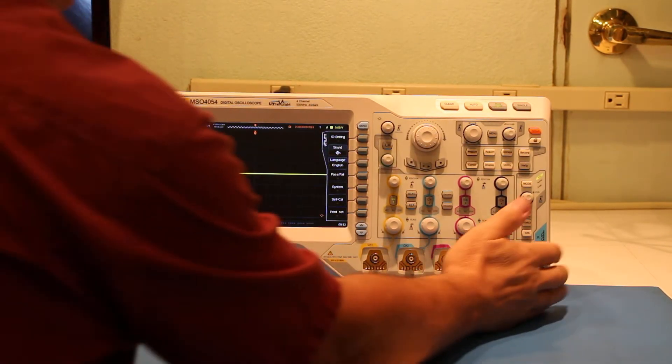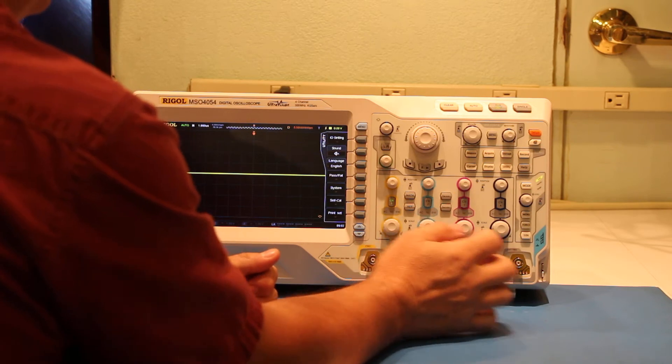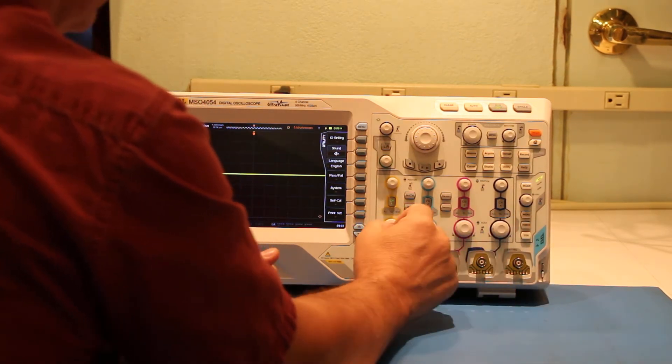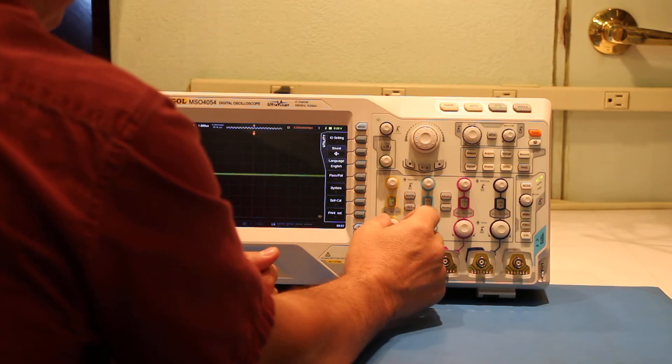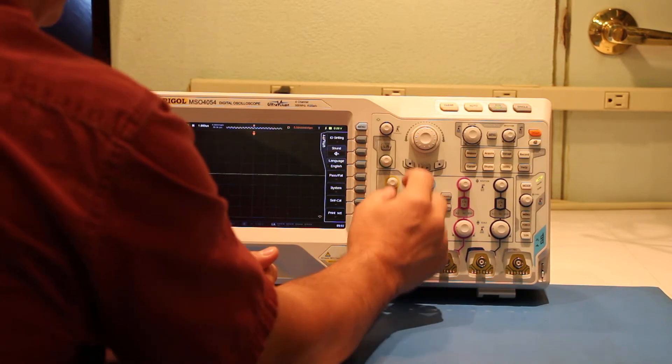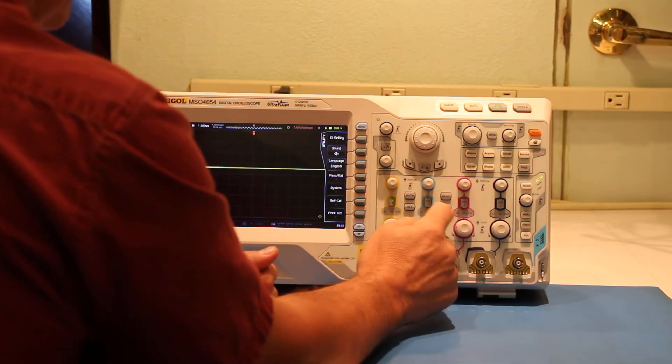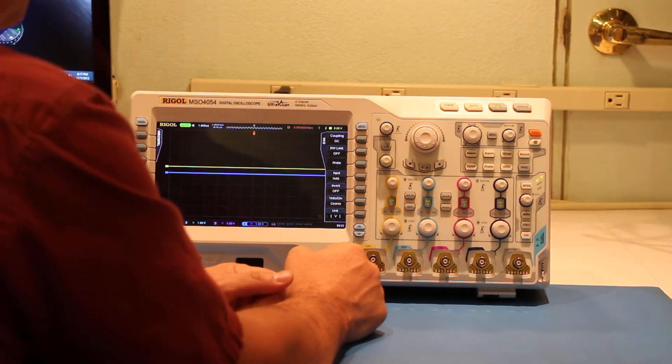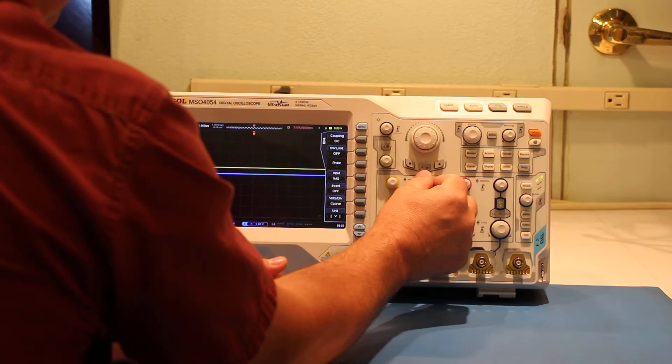Okay, some of the things that we're going to show you here very quickly: we've got standard vertical information here. We can adjust the sensitivity, we can adjust the location, we could turn on multiple channels. Of course, like I said, this is a four channel unit, and so all four channels are now on the screen.